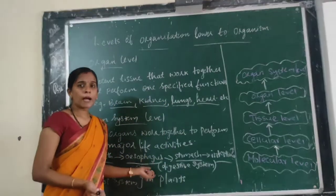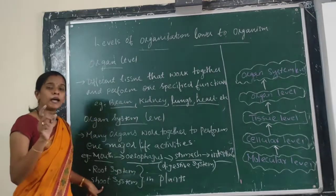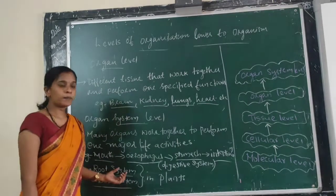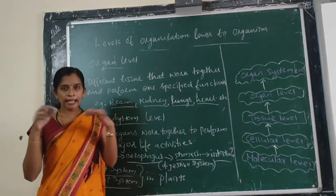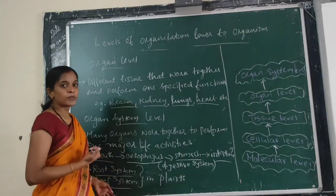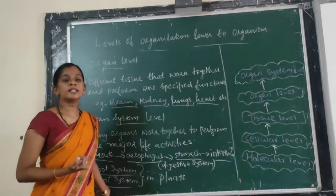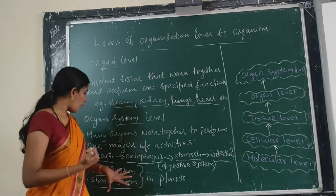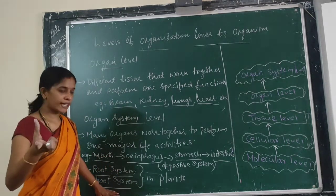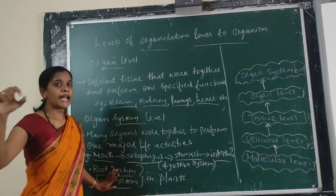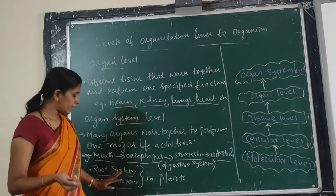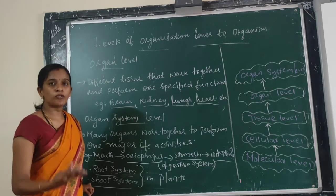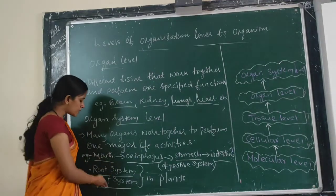This is about animals. When it comes to plants, they show a root system and a shoot system. In the root system, there is one main root and different branches of the root. In the shoot system, we have stem, leaves, flowers, fruits — all these are present in the shoot system, and each is a separate organ.